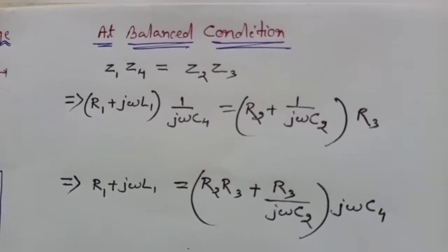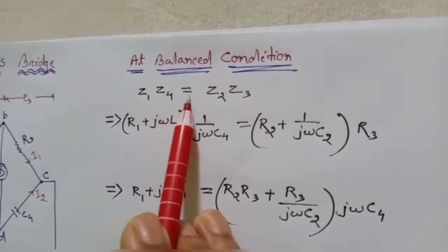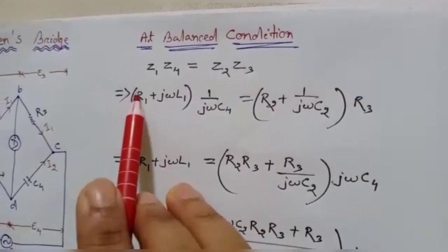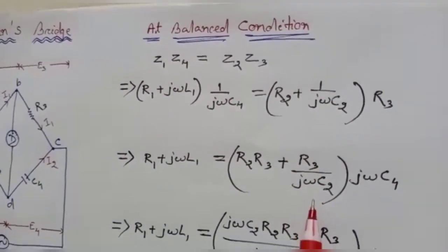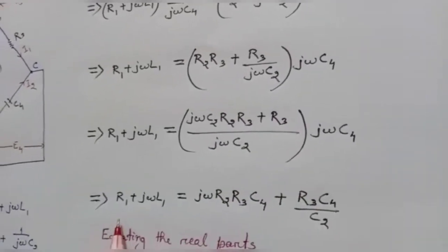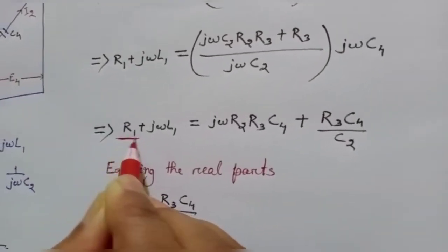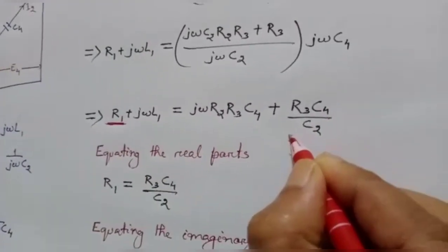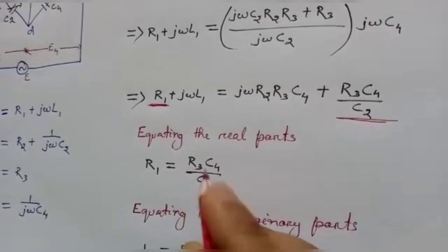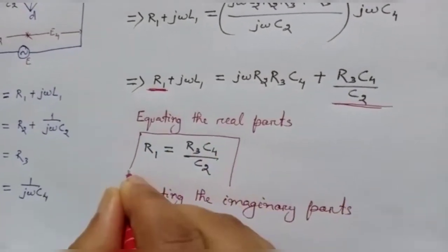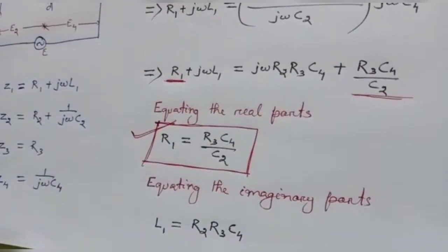To find the unknown parameters, we write the balance condition equation for the bridge: Z1 · Z4 = Z2 · Z3. Substituting all the values of Z1, Z2, Z3, and Z4 into this equation and solving, we equate the real parts. From the real parts, R1 is equal to R2·R3·C4 / C2. This gives us the value of the unknown resistance R1.